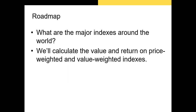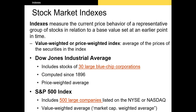In this section, I'll introduce you to the major indexes from around the world, and I'll talk about how we calculate index values and returns. An index measures the current price behavior of a representative group of stocks in relation to a base value set at an earlier period of time. It shows how the average price of a bundle of securities grows or declines over time. We have two types of indexes based on how they're calculated: value-weighted and price-weighted indexes.